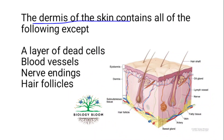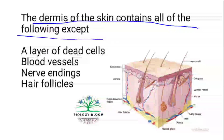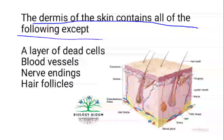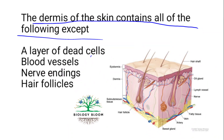Dermis of the skin contains all of the following except — a layer of dead cells, blood vessels, nerve endings, or hair follicles? Blood vessels, nerve endings, and hair follicles are all found in the dermis. Only a layer of dead cells is NOT found in the dermis — that is found in the epidermis.